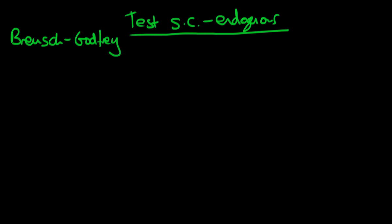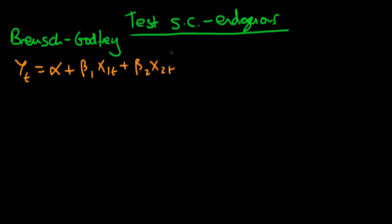Reminding ourselves of what we had in the previous video: the population process yt is determined by two independent variables x1t and x2t in the regression equation, along with some error et. The only difference between this regression specification and the previous one is that I've included another independent variable.